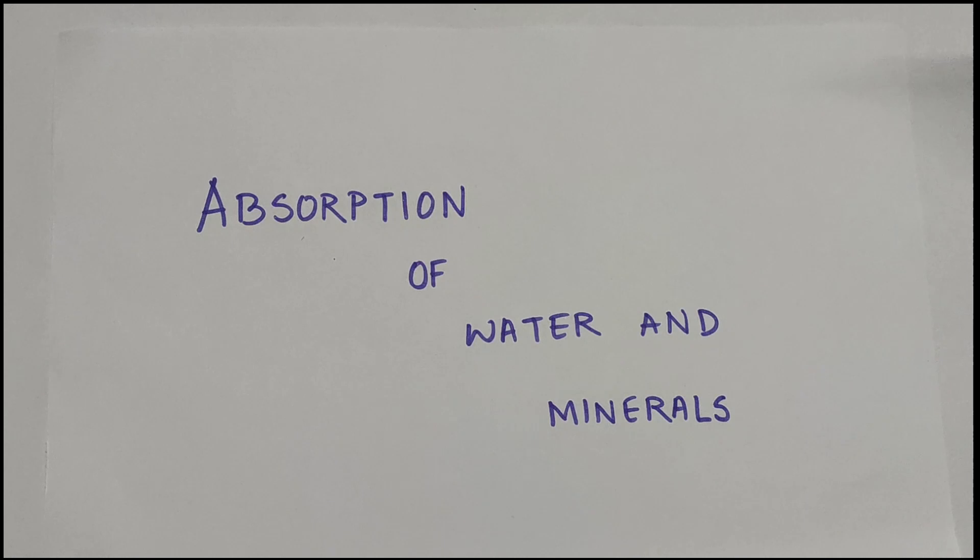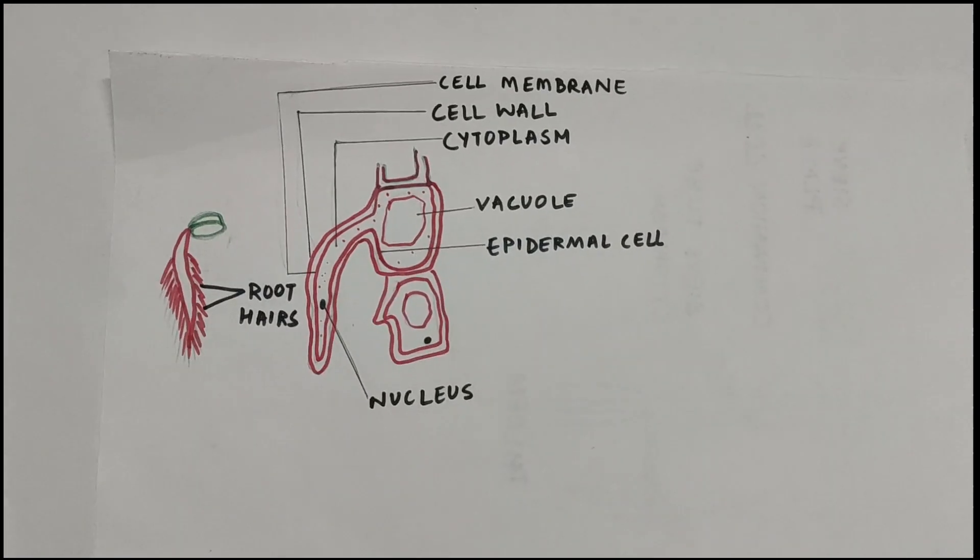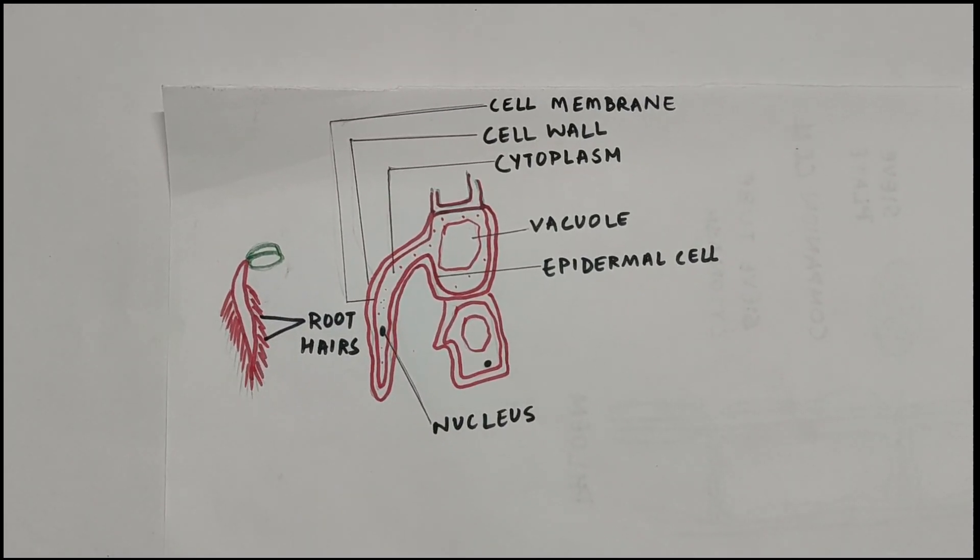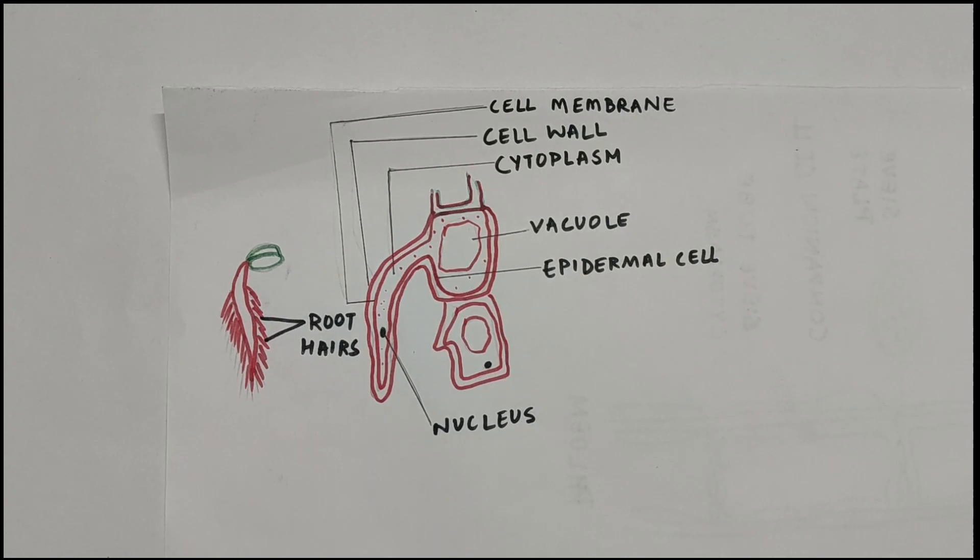Before we start, we need to know about an important part of the plant that is found in the roots, which is called a root hair. Root hair cells are unicellular thin wall outgrowths of the epidermis, which is the outermost layer of the root.